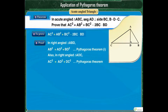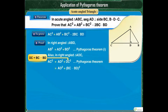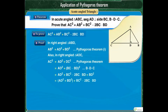Now, since point D lies between points B and C, DC is equal to BC minus BD. Thus, AC squared is equal to AD squared plus (BC minus BD) whole squared, which is equal to AD squared plus BC squared minus 2 into BC into BD plus BD squared. Since AB squared equals AD squared plus BD squared, replacing AD squared plus BD squared by AB squared, we get AC squared is equal to AB squared plus BC squared minus 2 BC into BD.